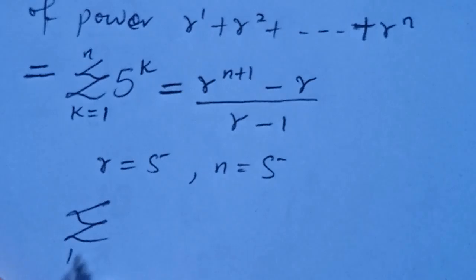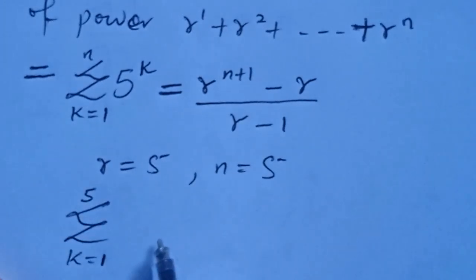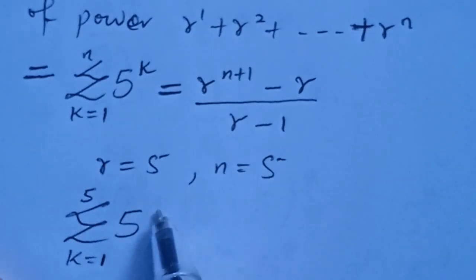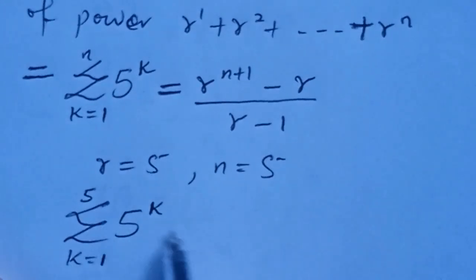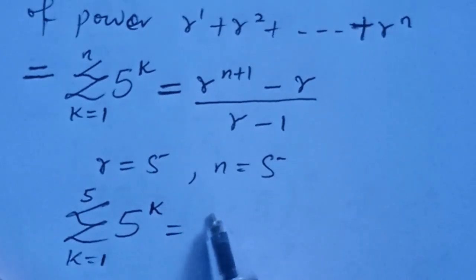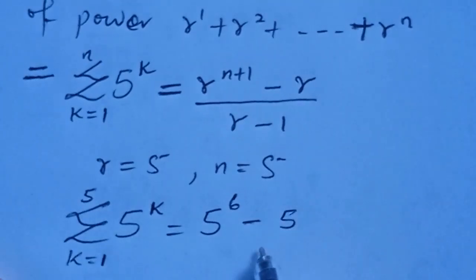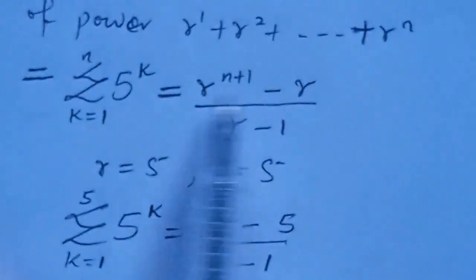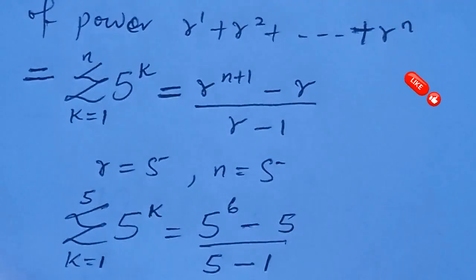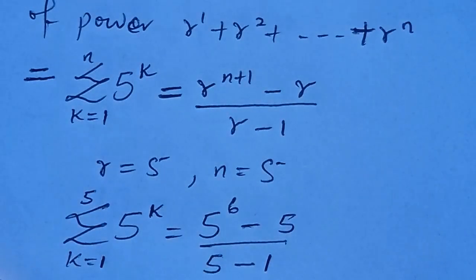We write the summation of k from 1 to 5 of 5 to the power of k. Applying the geometric series formula, this equals 5 to the power of 6 minus 5, all over 5 minus 1. So if we input those values, 5 to the power of 6 gives us 15625, minus 5, all over 5 minus 1.